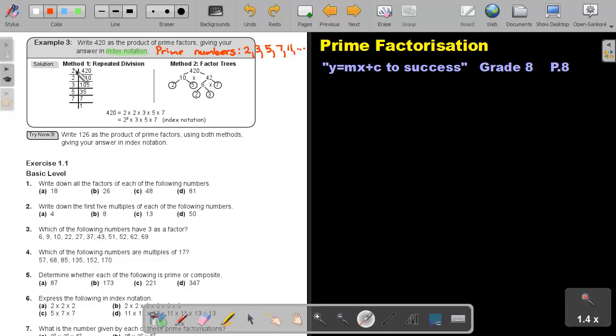So, here on the left will be the product of prime factors. So, that will be 2 times 2 times 3 times 5 times 7. But don't forget that I asked you to write it in index notation. So, count the 2's. There are 2 twos. So, it's 2 to the power of 2 times 3 times 5 times 7.